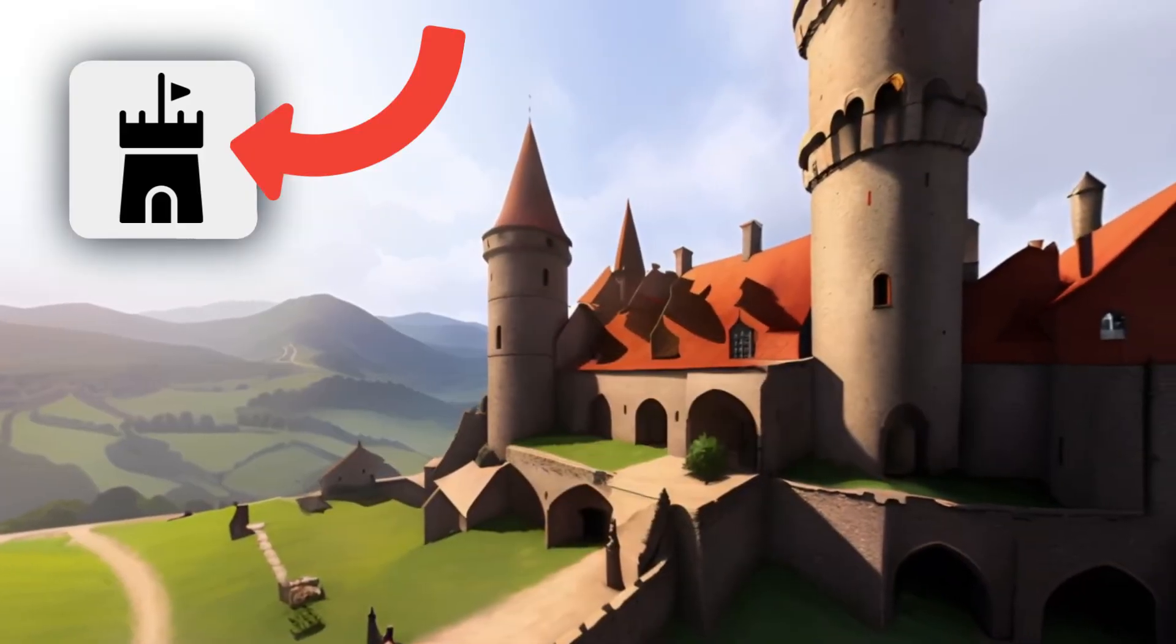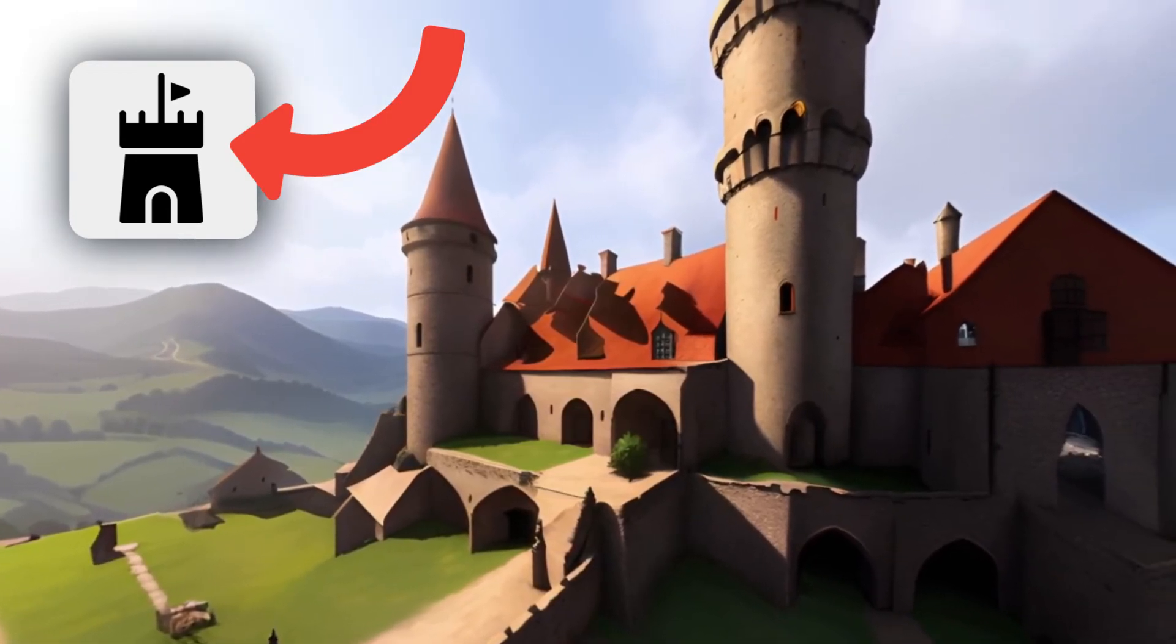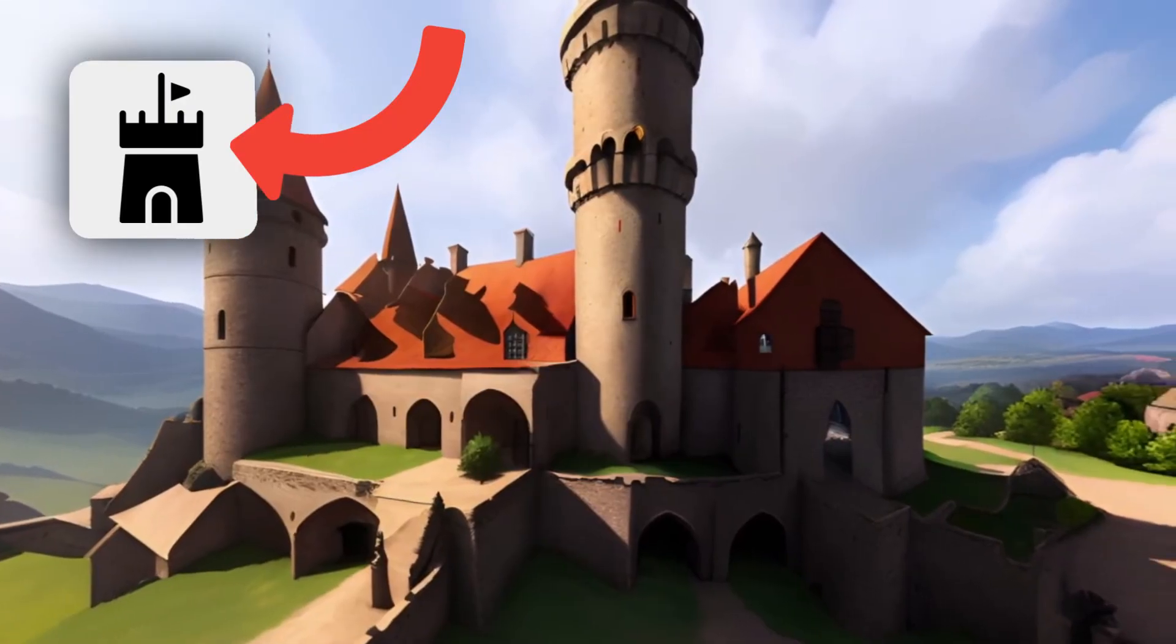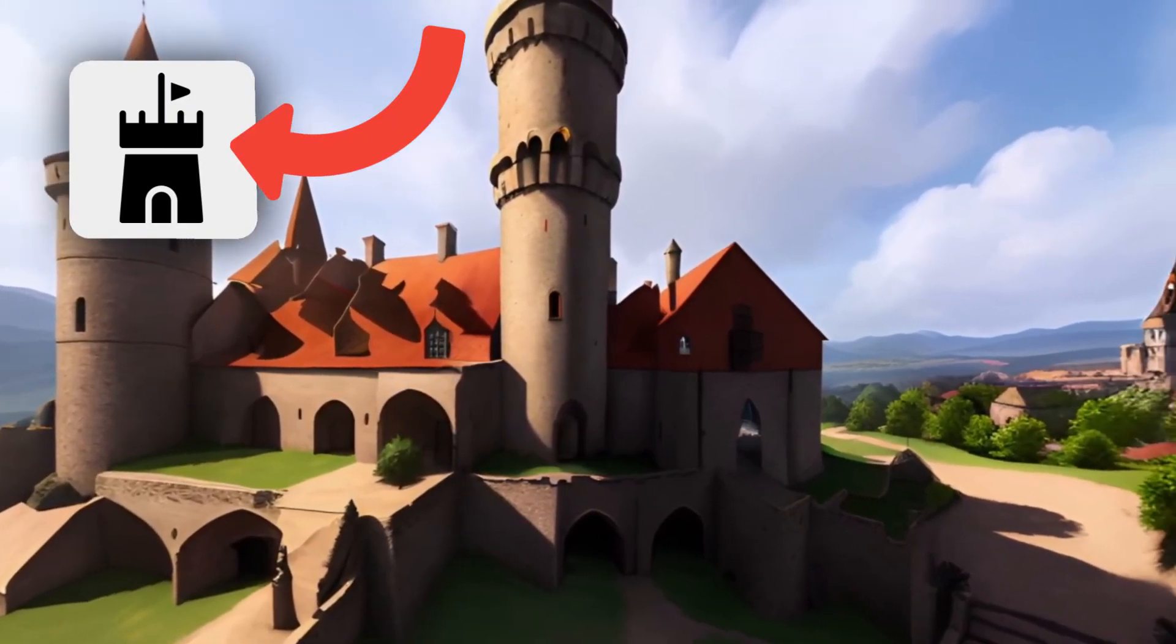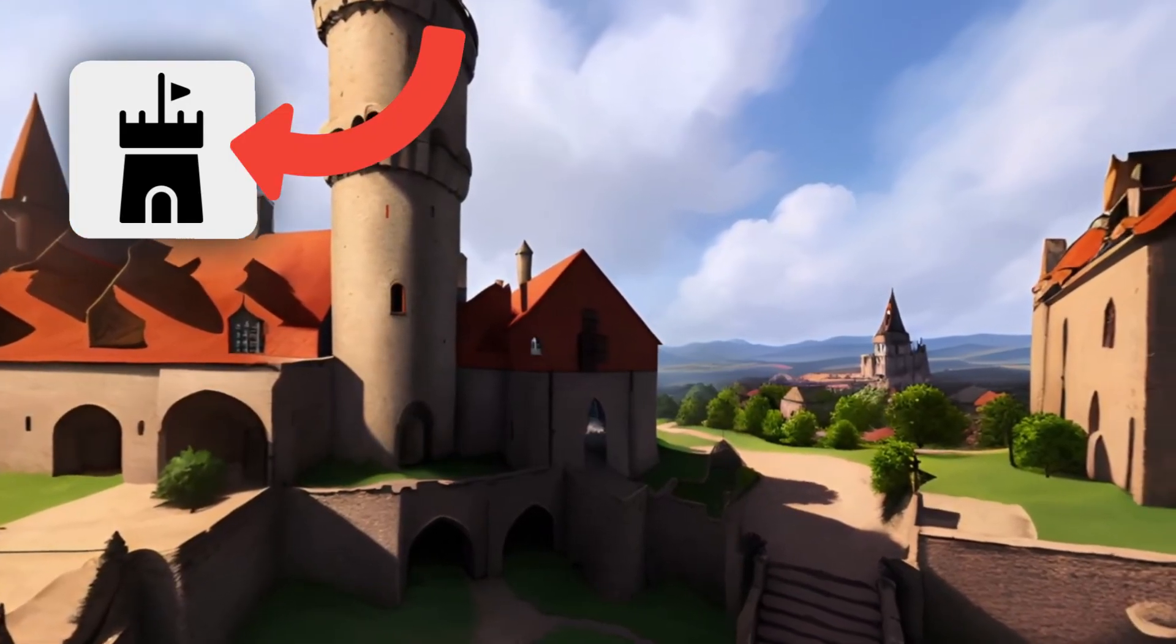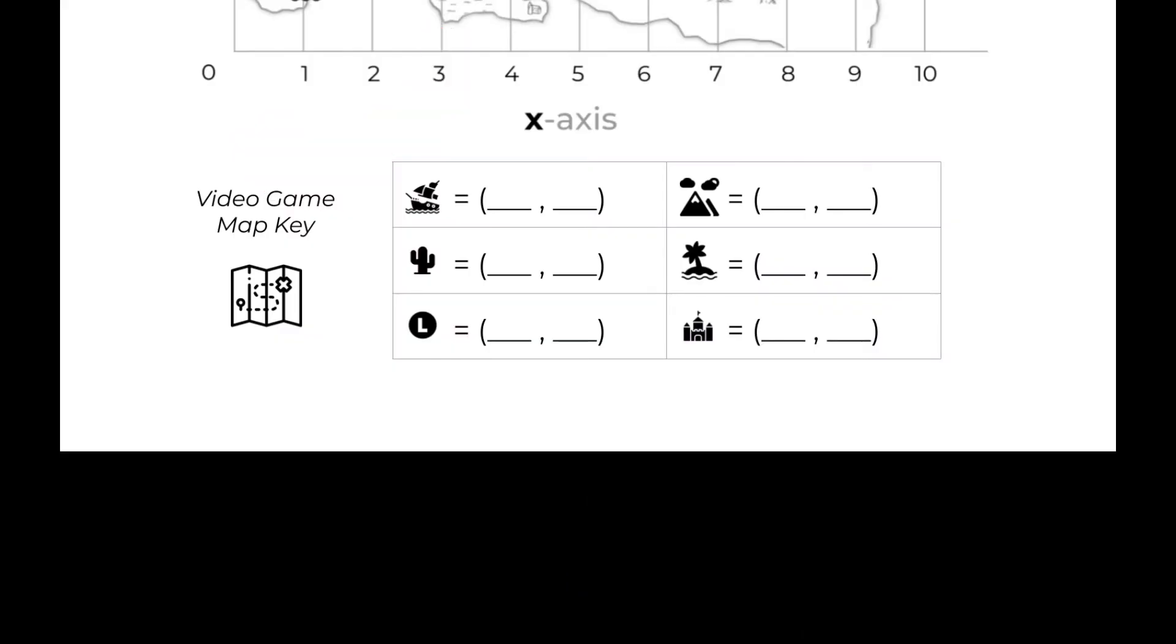Our final destination is the Royal Court. Try to find its ordered pair on the map. Perfect. It's in the north at point 4, 7.